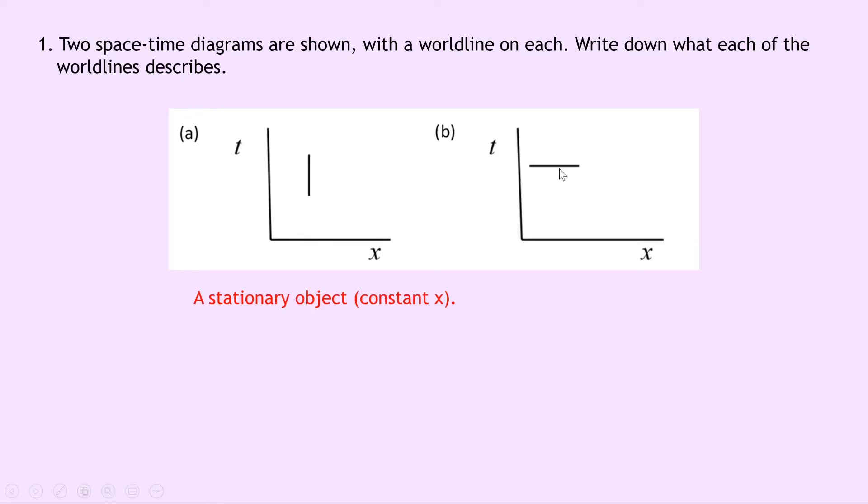Whereas in part B we've got a straight horizontal line which means we're going to have a constant time and a changing position. So this is the same as a rod in space-time. And we say that it is not classed as a worldline because it's got a constant time. And that's because worldlines are all to do with what happens to an object over time. So this one is called a rod in space-time.